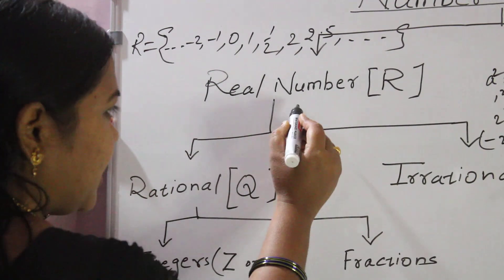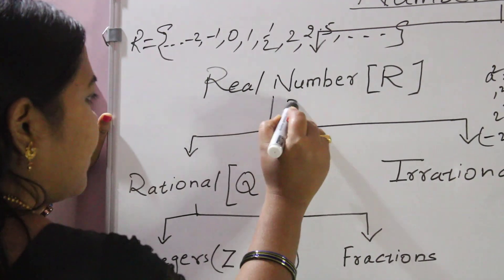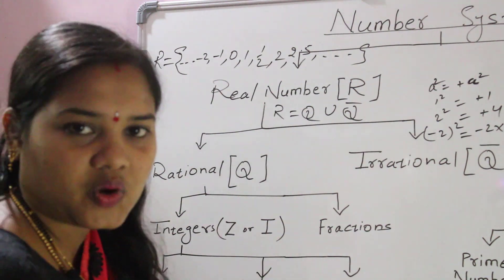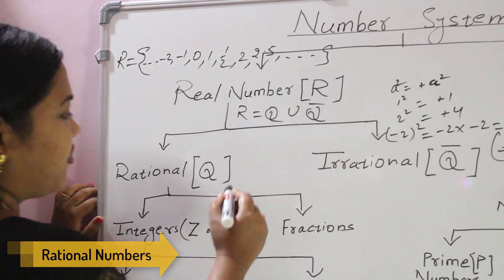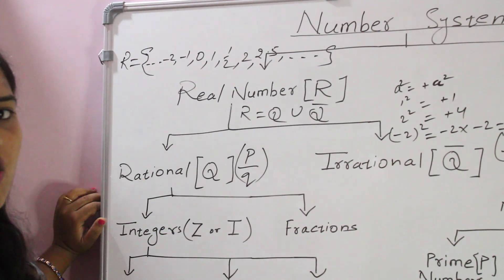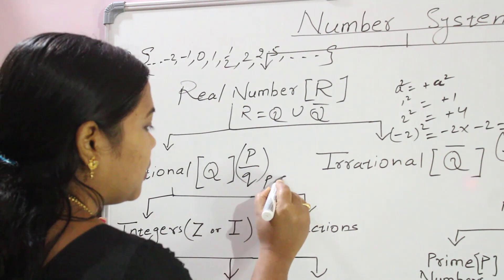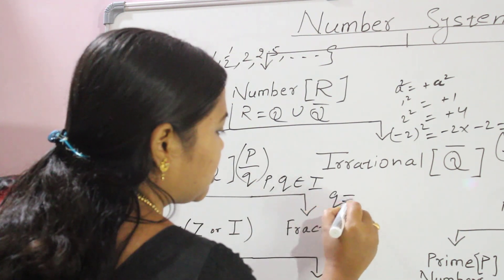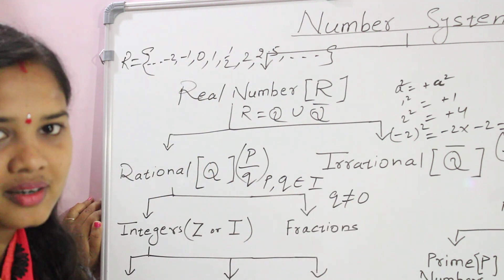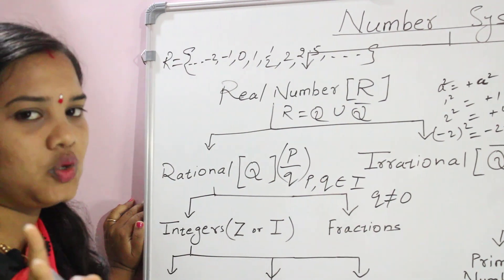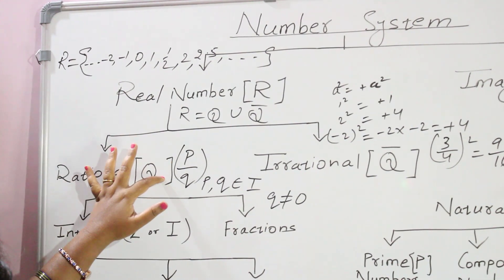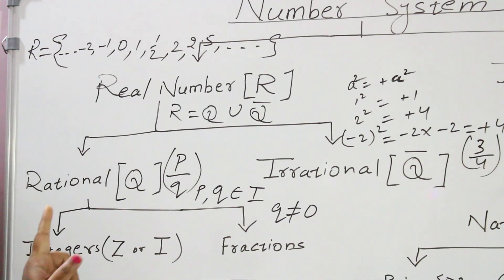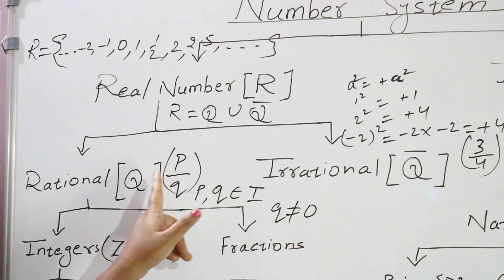The real number set is a union of rational numbers and irrational numbers: R = Rational ∪ Irrational. Rational numbers are always expressed in the form P/Q, which is a ratio of two integers where P and Q are both integers and Q is not equal to zero. A number must satisfy both conditions — P/Q form with integer numerator and denominator, and denominator not zero — to be a rational number.